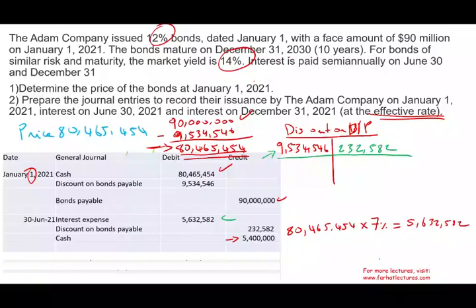The reason you record more interest expense than you paid in cash is because when you issued this bond at a discount, that discount is technically interest expense being amortized over the life of the bond. Your discount decreases by 232,582, so the new unamortized discount is 9,534,546 minus 232,582, giving you 9,301,964.